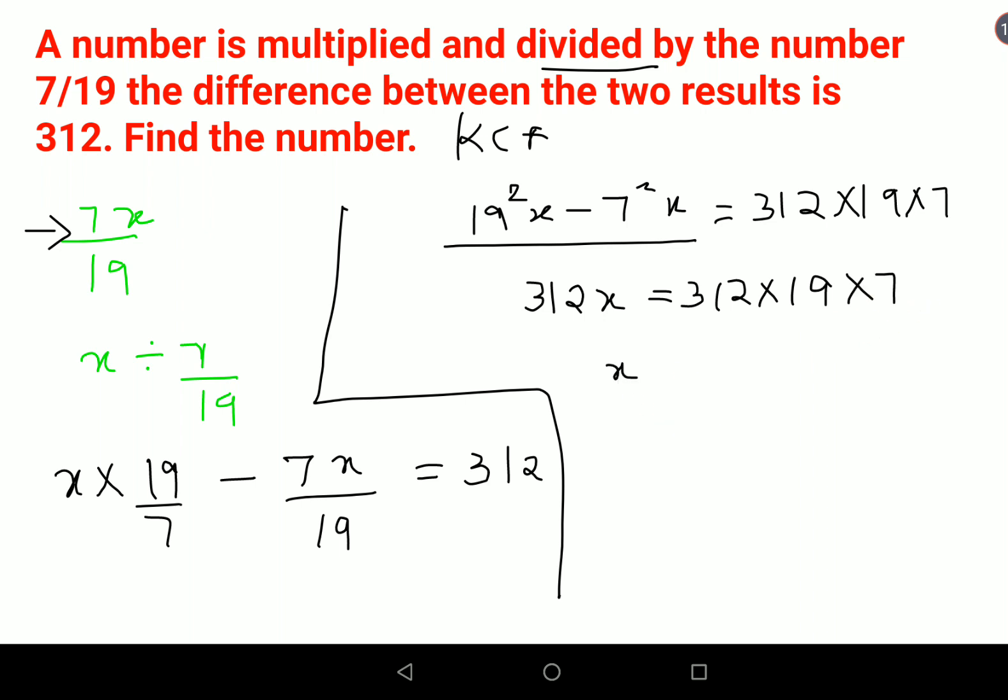Therefore, x equals 312 times 19 times 7 divided by 312. The 312s cancel, so x equals 19 times 7, which equals 133.